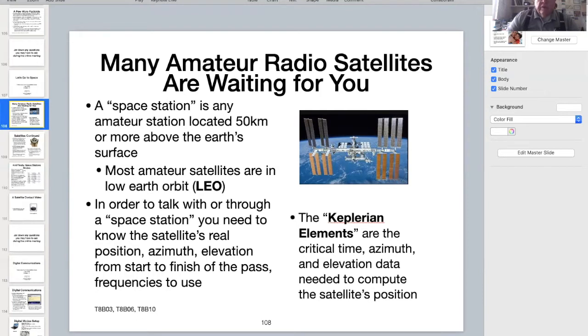You'll need to know where in the sky the satellite is currently located. You'll need to know its azimuth, elevation above the horizon during the satellite pass, and the frequency the satellite is listening on and the frequency it's transmitting on. All of this information is called the Keplerian elements, named after Johannes Kepler and his laws of planetary motion.